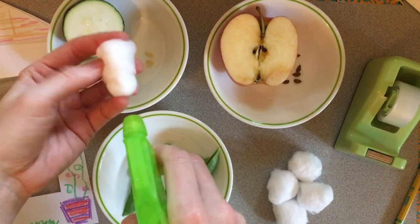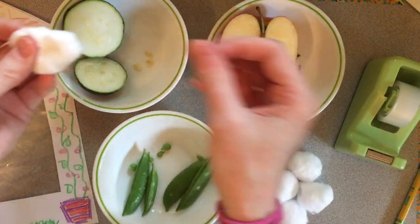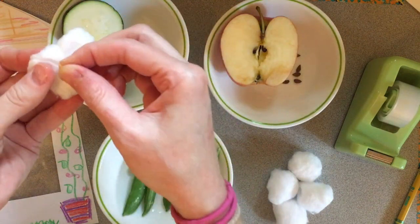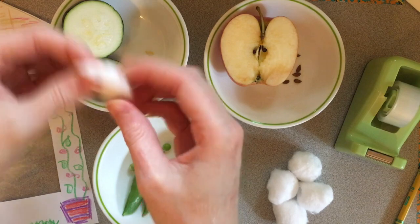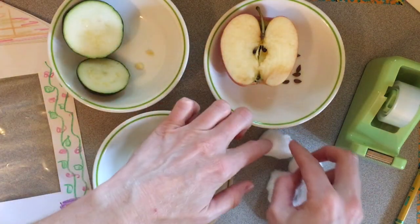And to start, I spray one of the balls with water. We want it to be damp, but not dripping wet. Get a seed, put it in the middle, give it a little hug, and then set it aside.